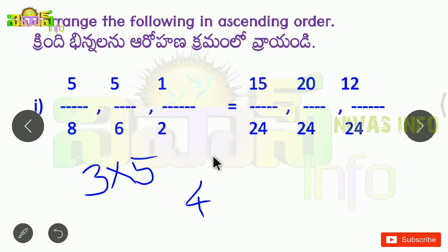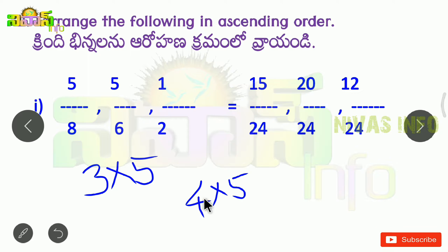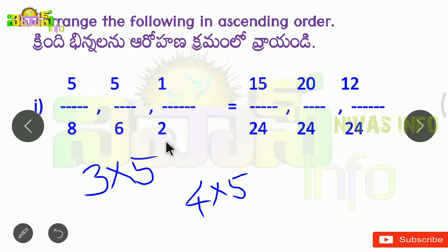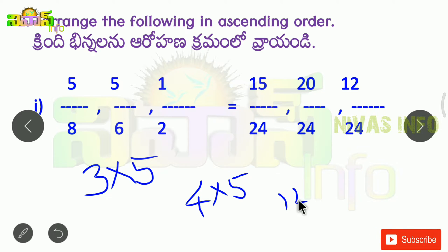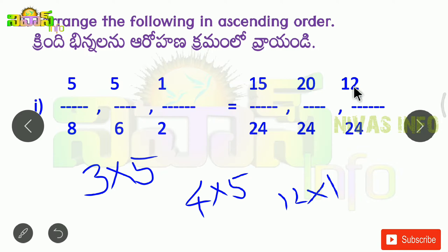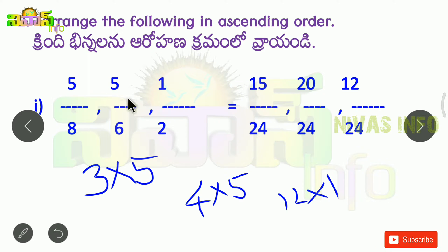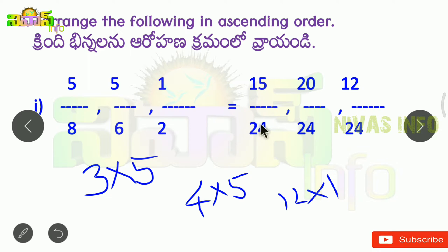Now we have 4 into 5. So 4 into 5 is 20. We can check out the numerator here. Next, here is 2 and here is 24. The 2 table: 2 times 12 is 24. So we have 12. Now we can check out the numerator. Here we have 12. We check what the denominator is.